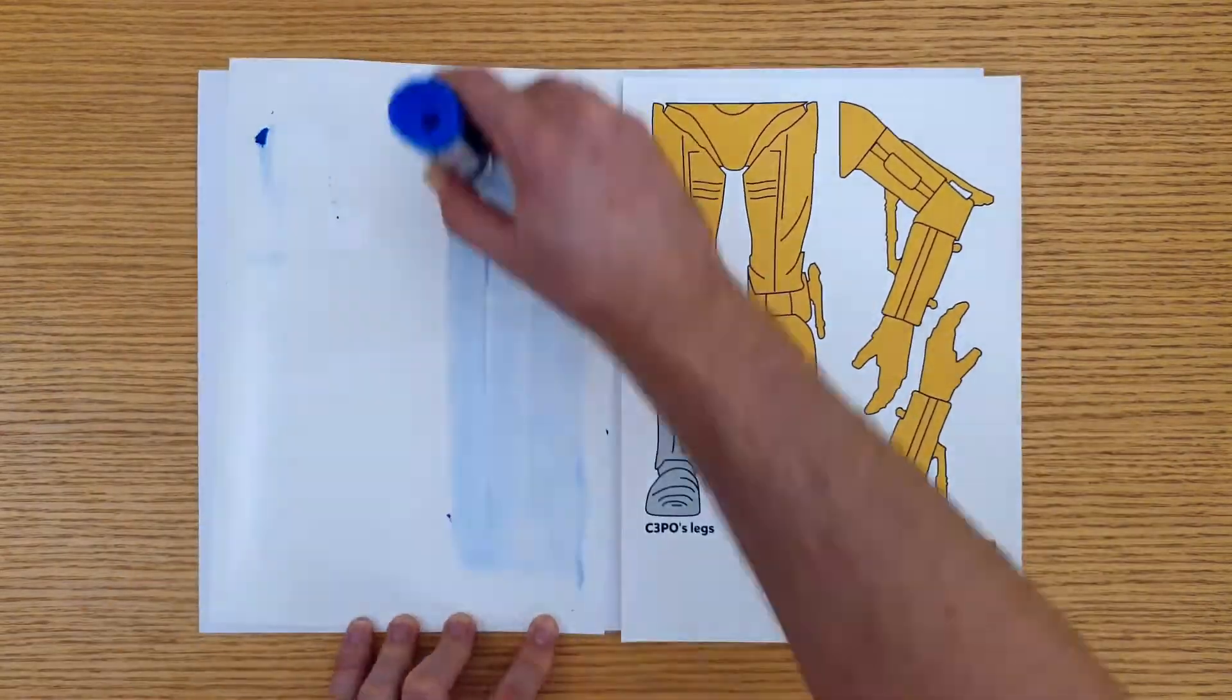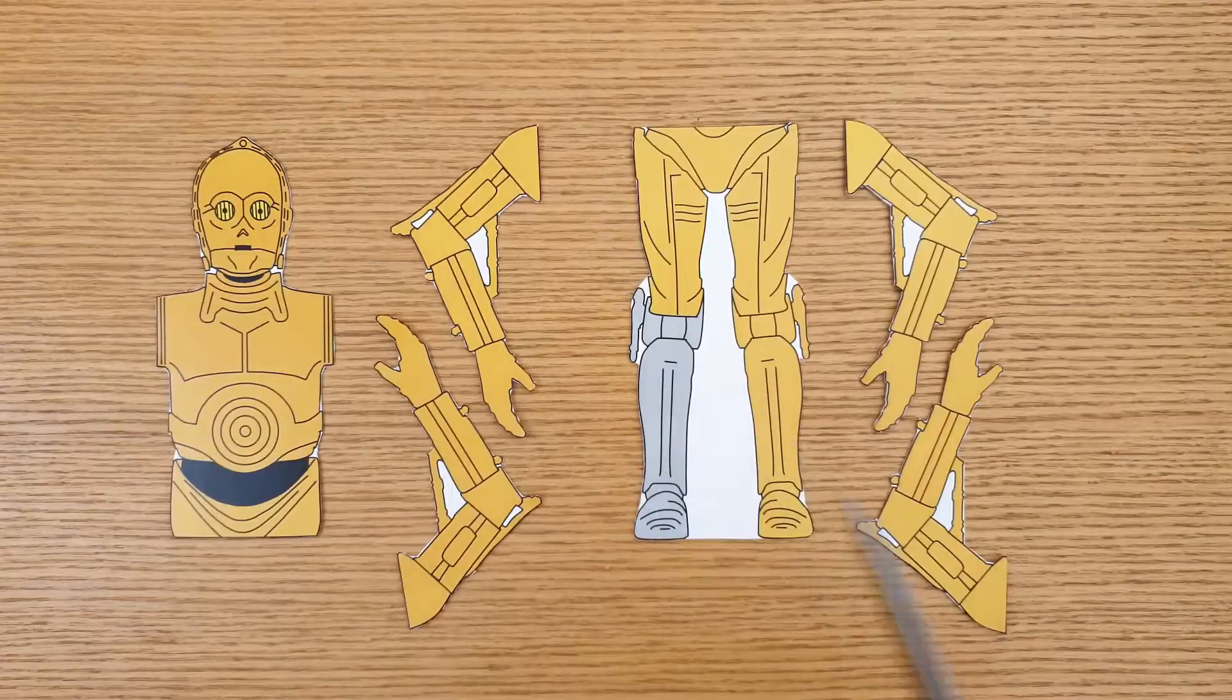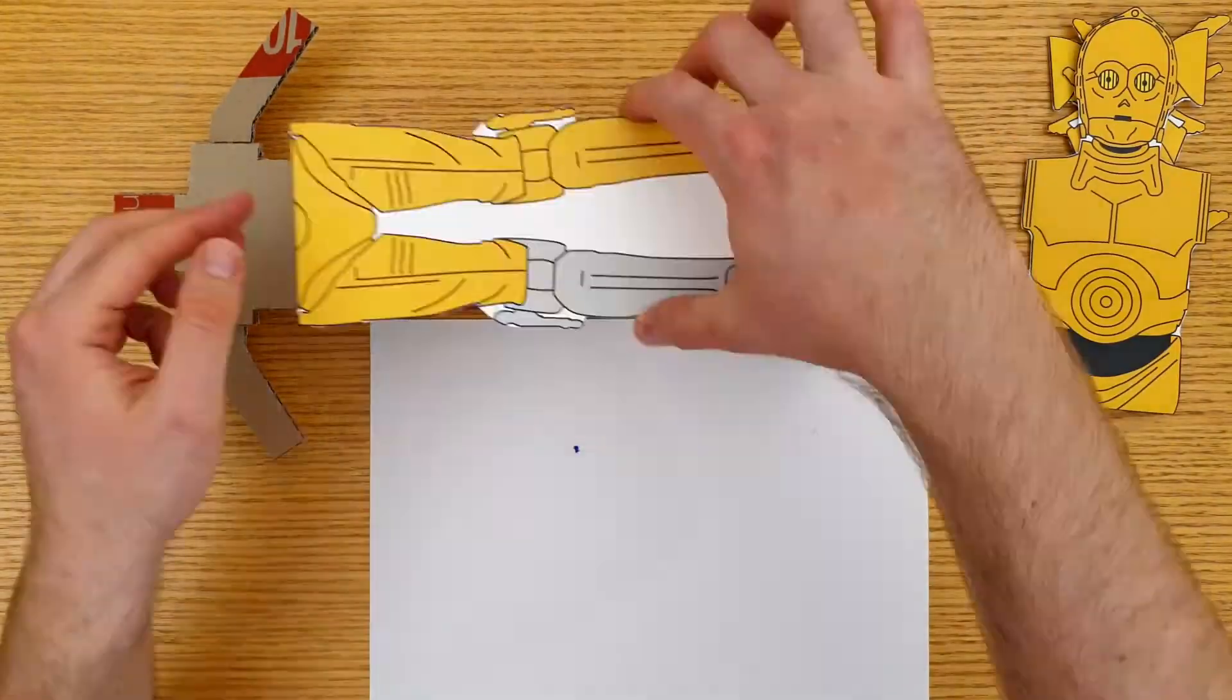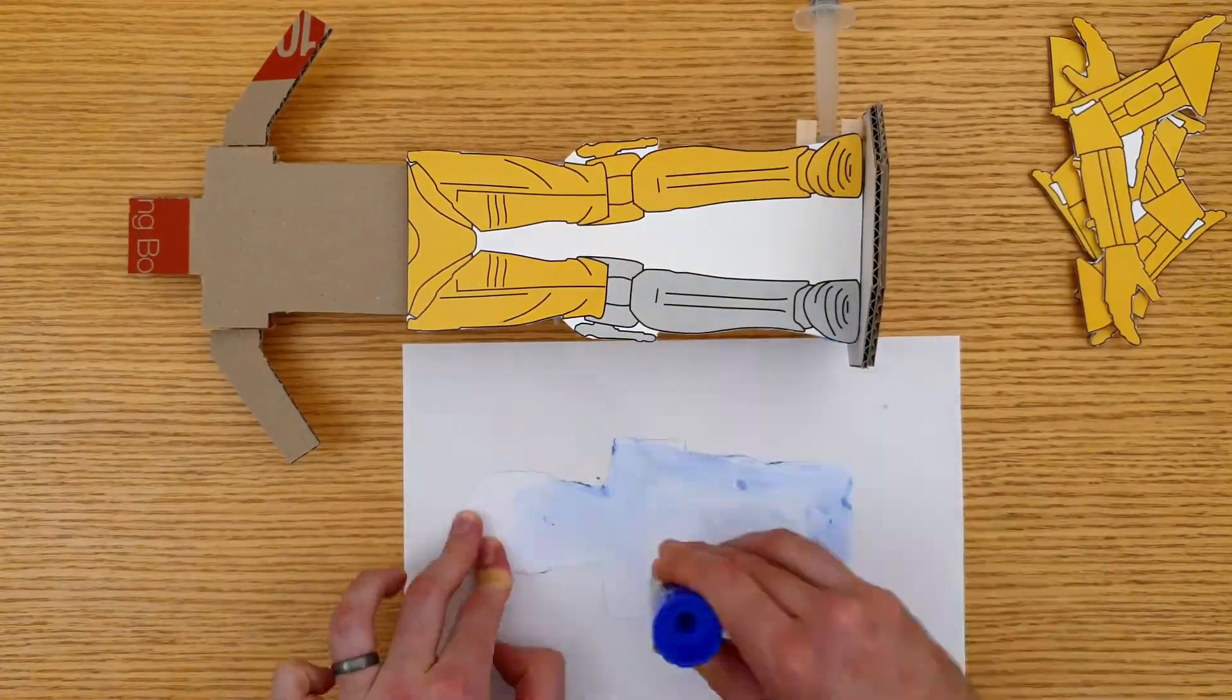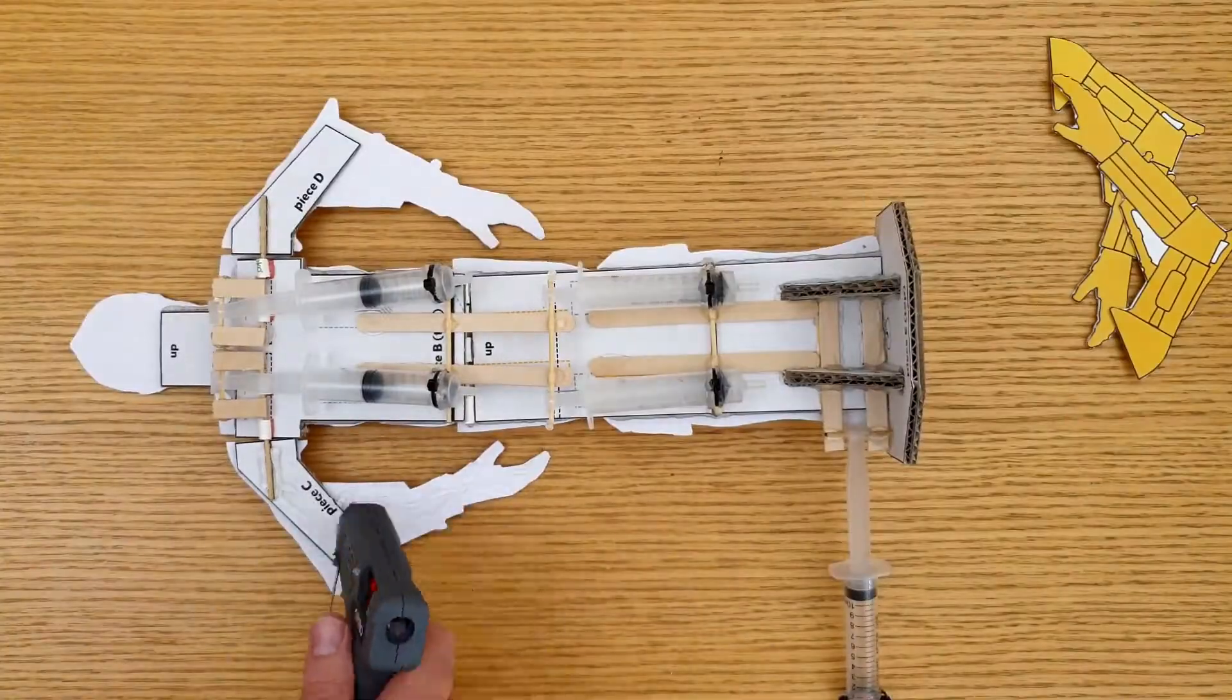To do this, glue the C-3PO printout to some thicker card and then carefully cut out each piece. Glue these pieces to the cardboard, starting with the legs, then the body, each arm on the front, and each arm on the back. He's looking really good.